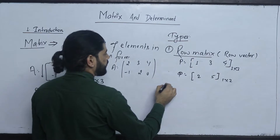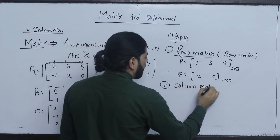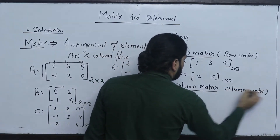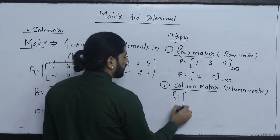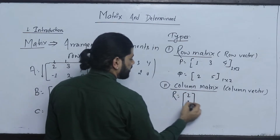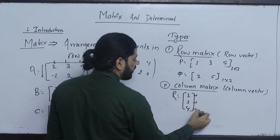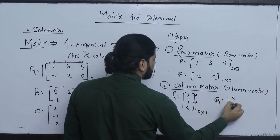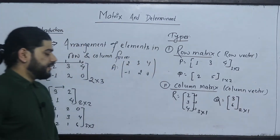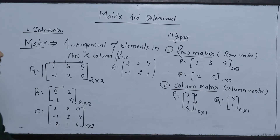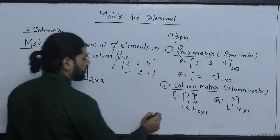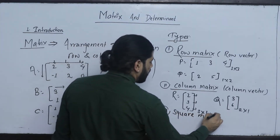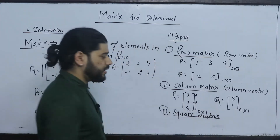The second type is the column matrix, also called a column vector. For example, S equals [2, 3, 4] arranged in a single column. Then we will write the square matrix — a matrix where the number of rows equals the number of columns.